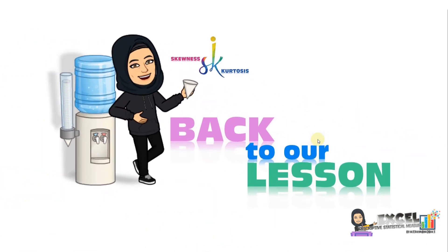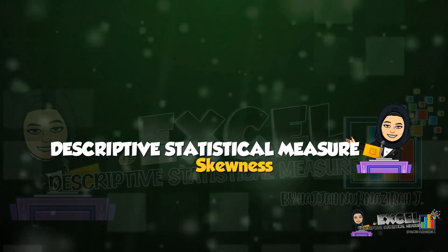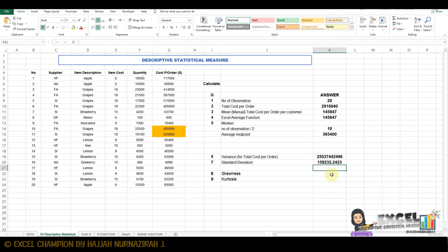Back to our lesson. Question 8: skewness. Press equals, type SKEW, choose SKEW, double-click, select our data range, Shift-Control-Arrow Down.